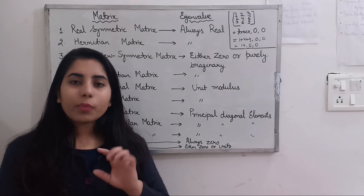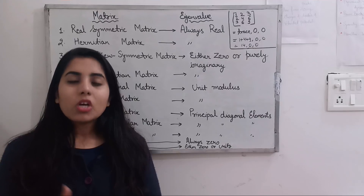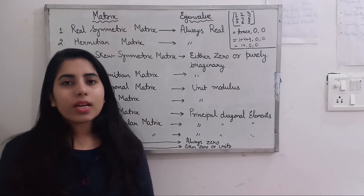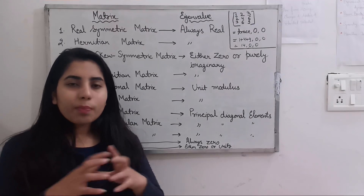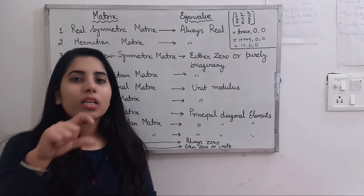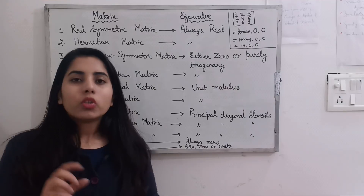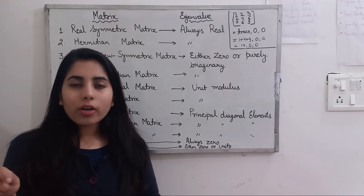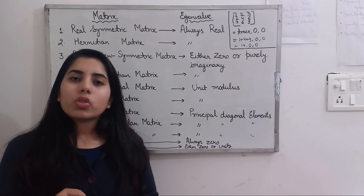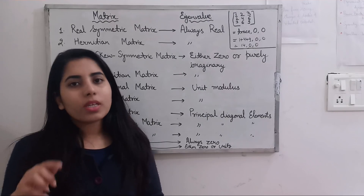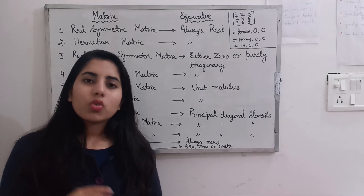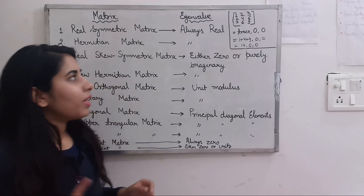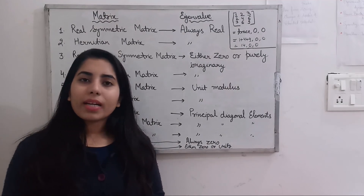For example, consider a 3×3 matrix where all elements are 1. Since the order is 3, the eigenvalues will be 3, 0, 0 — one non-zero eigenvalue equal to 3 and the other two are zero.